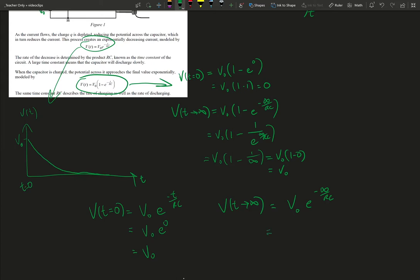which is the same as V0 e, actually, sorry, 1 over e to the big number over RC, which is really the same as V0 over a really big number.